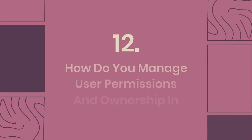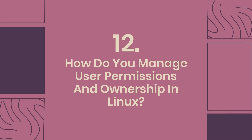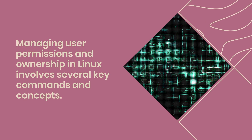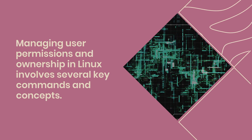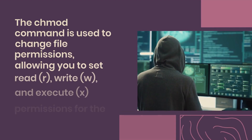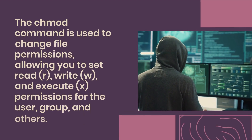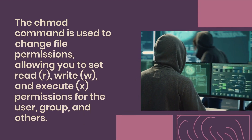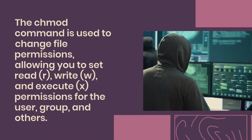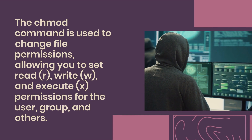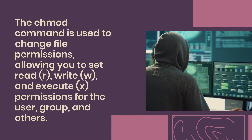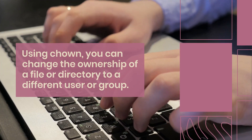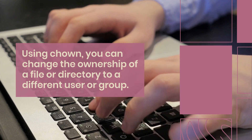Question 12: How do you manage user permissions and ownership in Linux? Managing user permissions and ownership in Linux involves several key commands and concepts. The CHMOD command is used to change file permissions, allowing you to set read, write, and execute permissions for the user, group, and others. Using CHOWN, you can change the ownership of a file or directory to a different user or group.